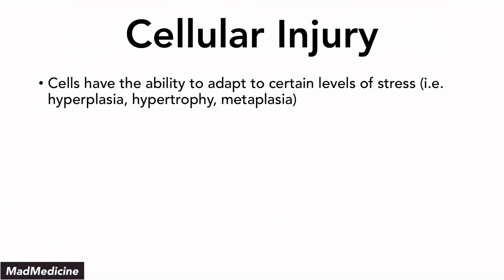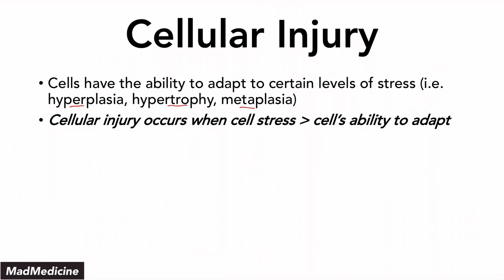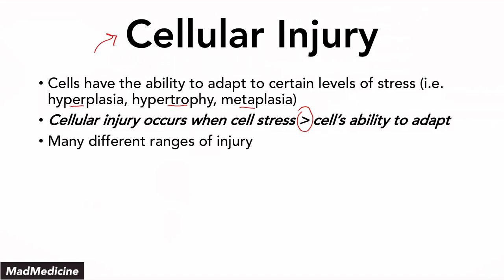Our cells are usually able to adapt to a certain level of stress through certain mechanisms like hyperplasia, hypertrophy, and metaplasia. But when the cell's stress level exceeds the ability for it to adapt, you are going to see some sort of cellular injury occurring. The range of the injury is going to depend on several different things like the type of cell, the stress level, and the type of stress itself.